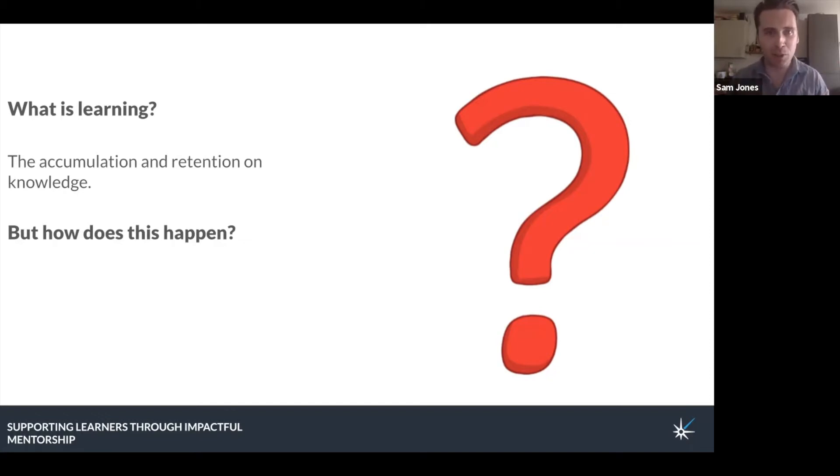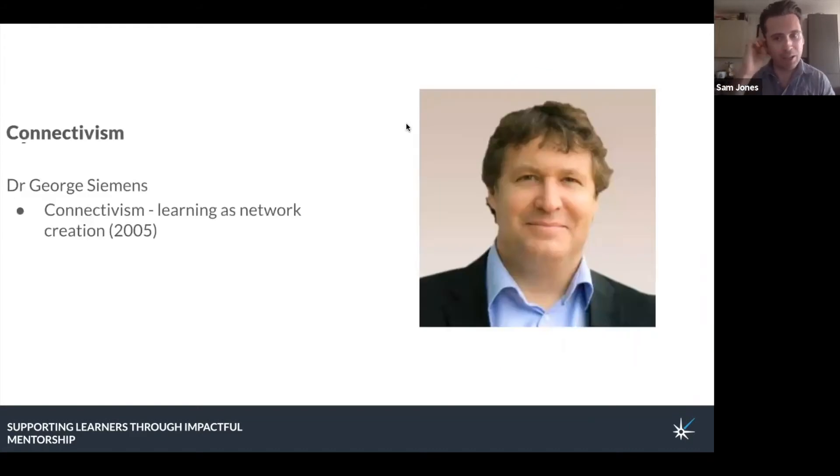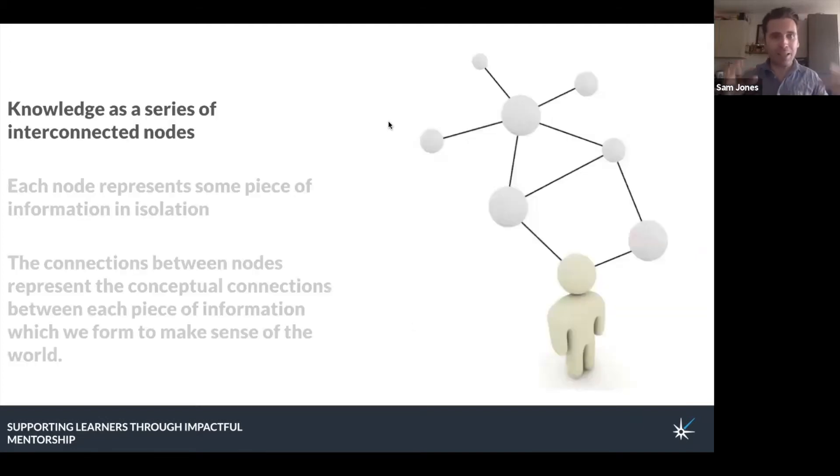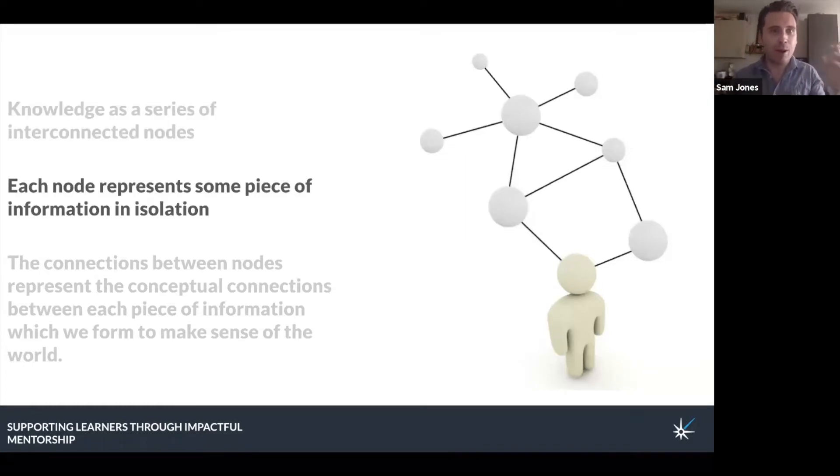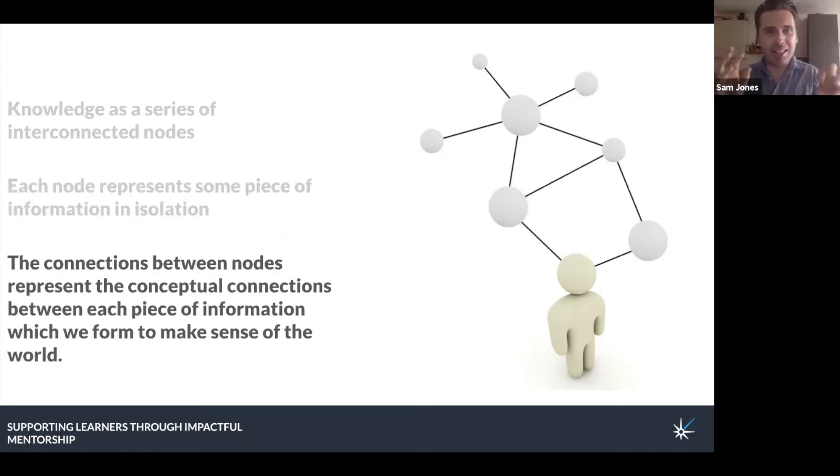I want to define learning as the accumulation and retention of knowledge. That feels like a reasonably uncontroversial place to start. But then a more interesting question is how does that actually happen? That's a much more difficult, contentious question to answer. There's a bunch of theoretical models which all seek to explain exactly what happens at a cognitive level when we learn something. Some have a lot of overlap, and some are in almost diametric opposition to each other. But the model I tend to find the most compelling is called connectivism, which was outlined by this guy here, Dr. George Siemens. He's a psychology professor from Canada.